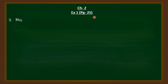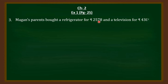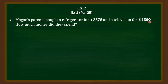Now, Magan's parents bought a refrigerator for rupees 2,578 and a television for rupees 4,309. How much money did they spend? Now, Magan's parents are buying two things — one is a refrigerator and one is a television — and the question is asking how much money they have spent in total.